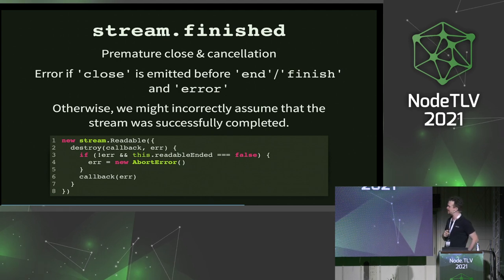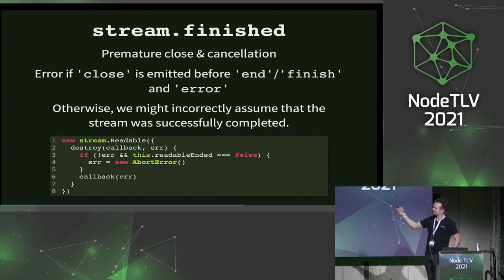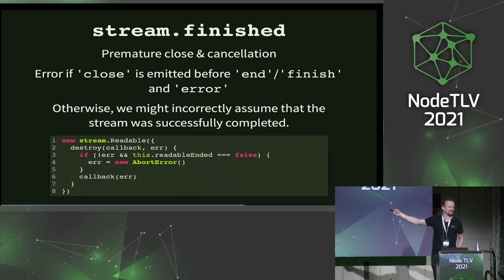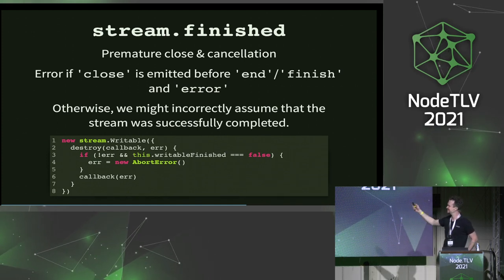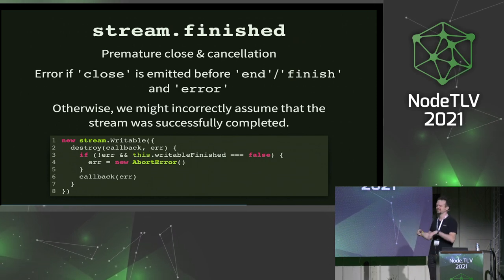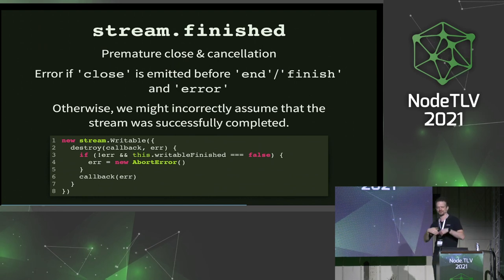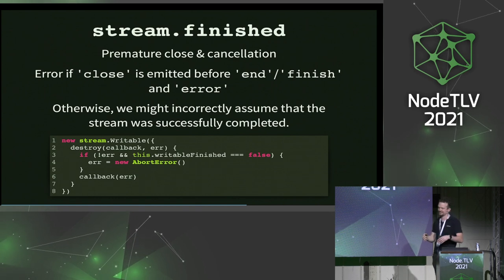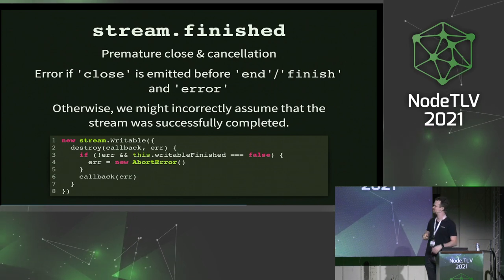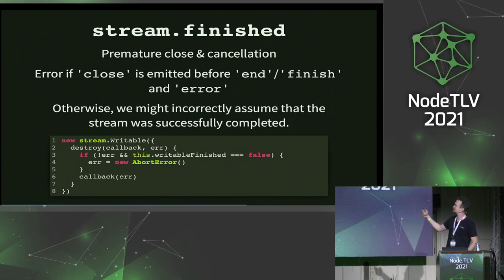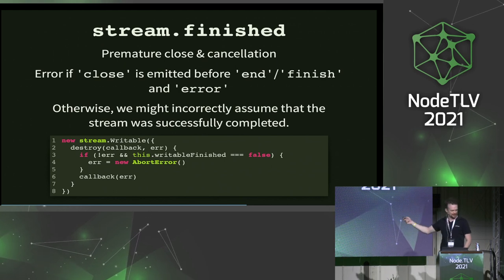When you implement your streams, if somebody calls destroy without an error and in a readable case it hasn't ended, you can help the user — give them an abort error. Be nice. Likewise with writable: because a lot of users think of destroy as cancel, and when you cancel you don't always give a reason. The assumption is that it's an abort, but that's technically incorrect. Please try to implement streams like this so that even when users don't use stream.finished, it will kind of work for them.